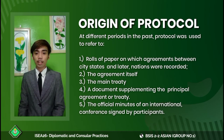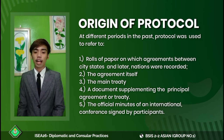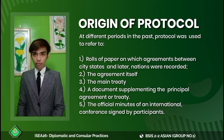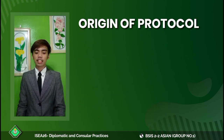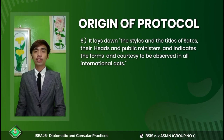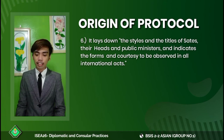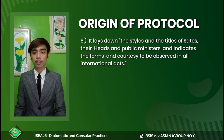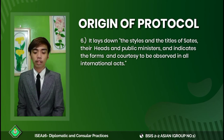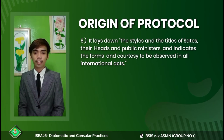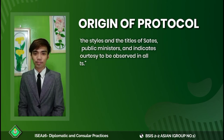Number five, the official minutes of an international conference signed by participants — the written record of a meeting or assembly, signed by its participants. Number six, protocol lays down the styles and titles of states, their heads, and public ministers. Lastly, it indicates the forms of courtesy to be observed in all international acts.